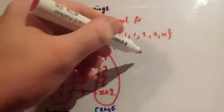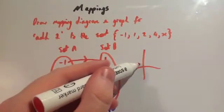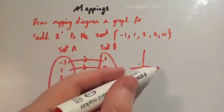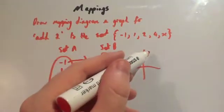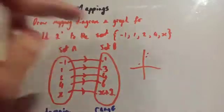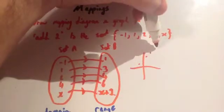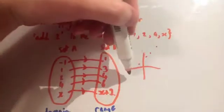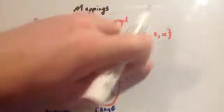To draw the graph, you'd plot the coordinates: minus 1 and 1, then 1 and 3, then 2 and 4, then 4 and 6, and then you'd draw a line through those points with a ruler. That would give you the graph y equals x plus 2.